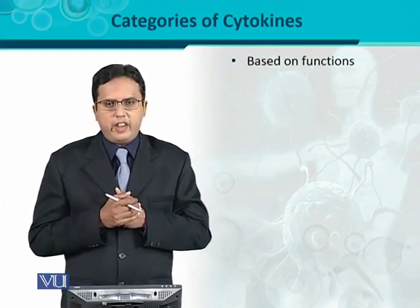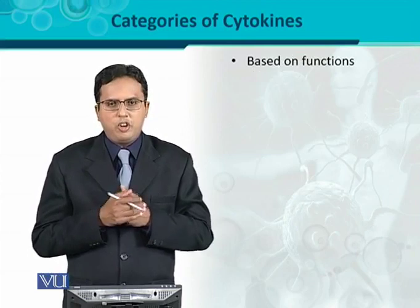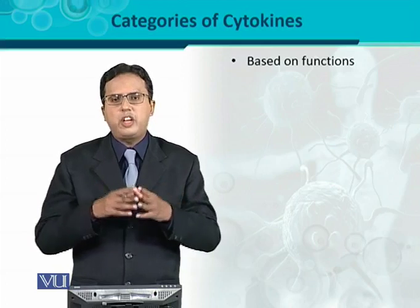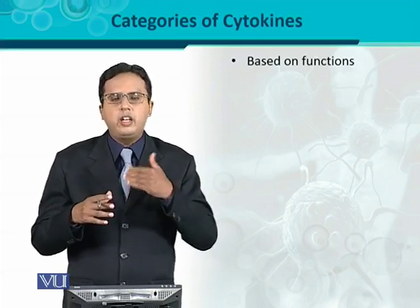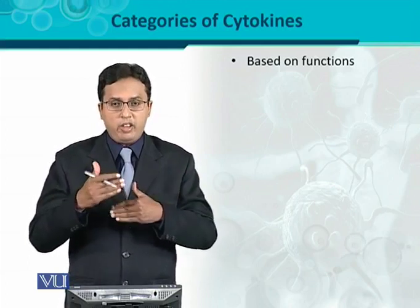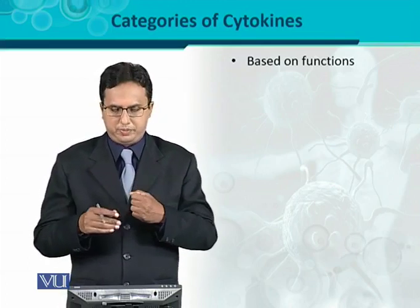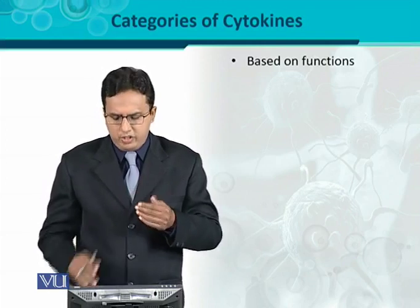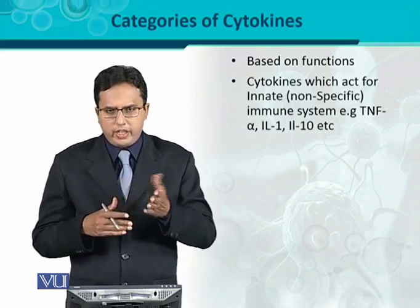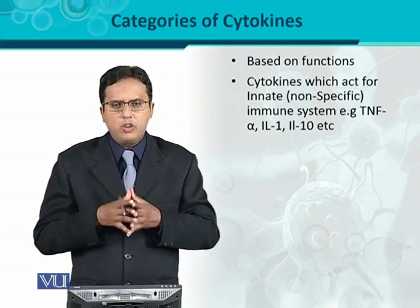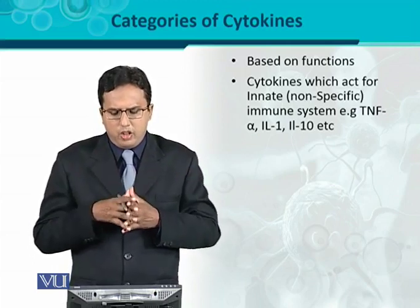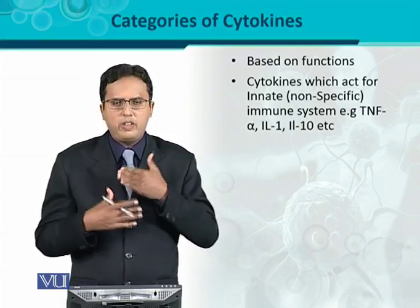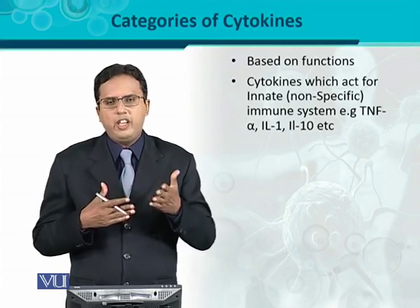There is another way to classify cytokines: based on their functions. Cytokines — whether monokines, lymphokines, interleukins, or chemokines — can be categorized by how they help the immune system. Since the immune system has two categories, those cytokines which act primarily on the innate or non-specific immune system are called cytokines of the innate immune system.